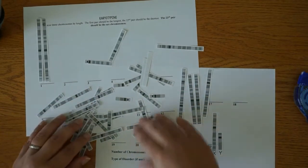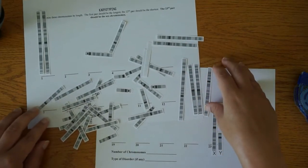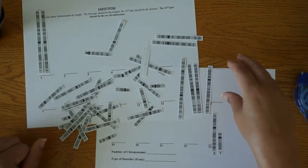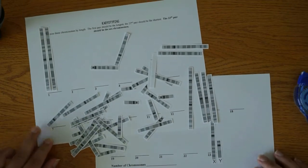Keep in mind that you might have an extra chromosome. So there might be a third one for one of the pairs and you need to hold that aside and you can put that on at the end.